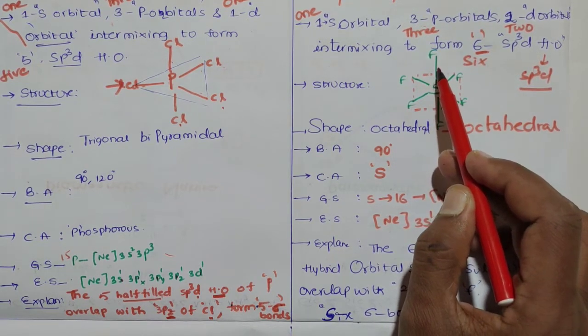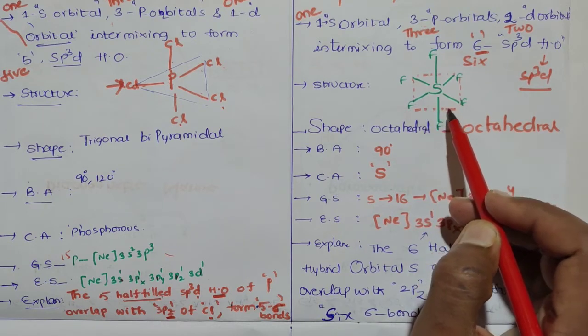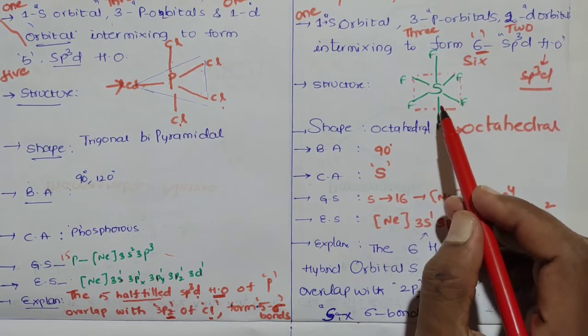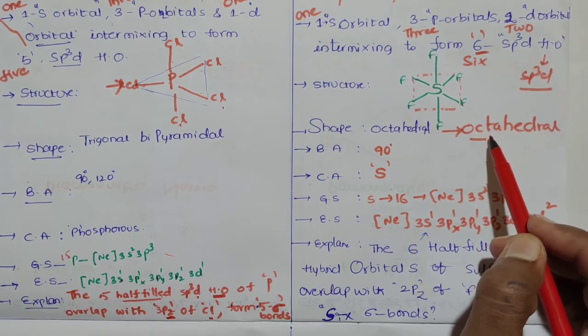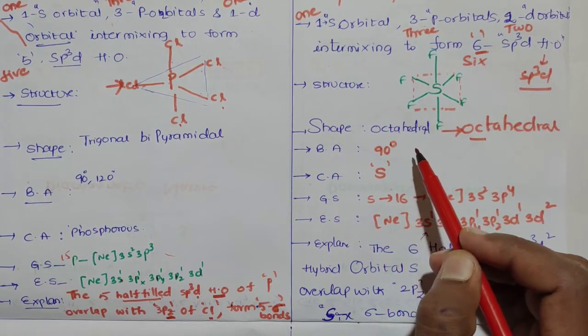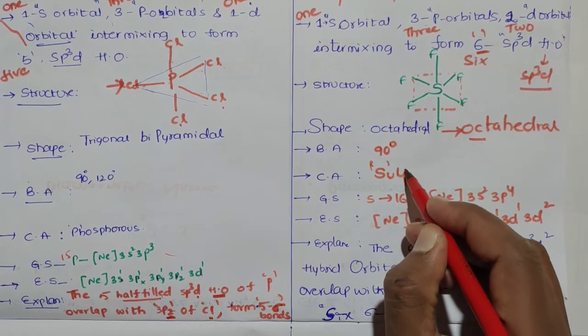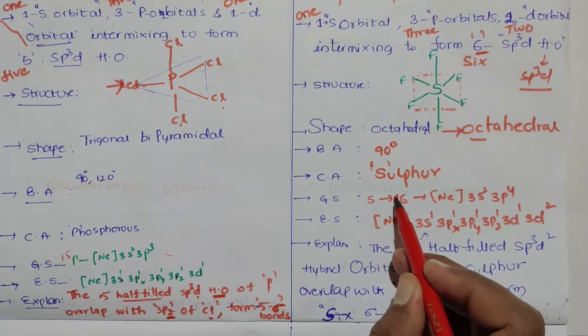These bonds should extend from the diagram. This structure is octahedral. The shape is octahedral. Bond angle is compulsory 90 degrees. Central atom is sulfur. Sulfur atomic number is 16.